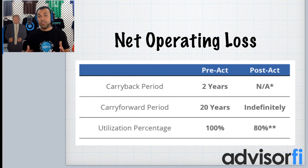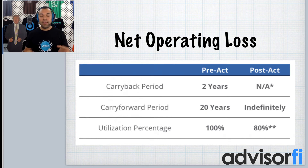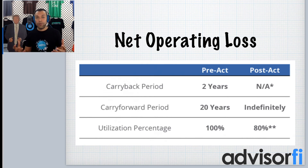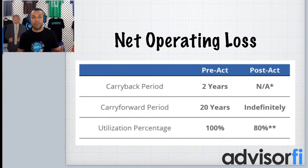But when you take all this into account, at the end of the day it's the brackets that really drive this awesome reform as far as C corporations are concerned. Lowering the rates as high as from 35% down to 21% is a huge benefit for people who own C corporations.